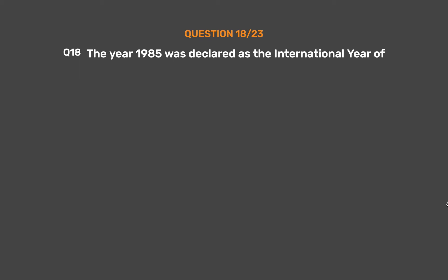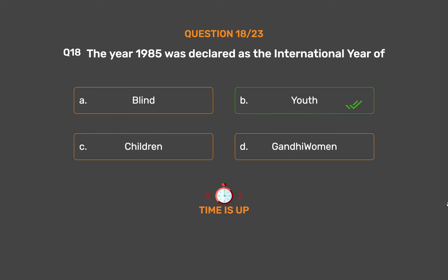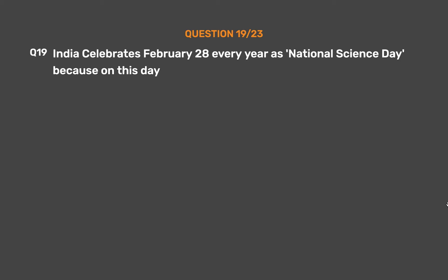Question No. 18. The year 1985 was declared as the International Year of: Option A, Blind; Option B, Youth; Option C, Children; Option D, Women. The correct answer is Option B, Youth. The year 1985 was proclaimed by the United Nations as the International Youth Year, held to focus attention on issues of concern relating to youth.